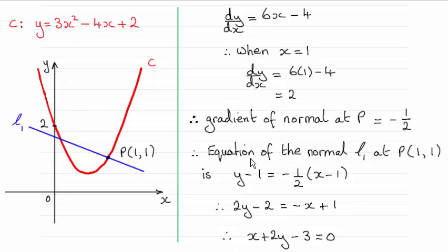So we've got the gradient, now we're in the position to get the equation of the normal L1 at the point P with coordinates 1, 1. We just use the form of a line y minus y1 equals m the gradient times x minus x1. And x1 is the 1 and y1 is the 1 here.